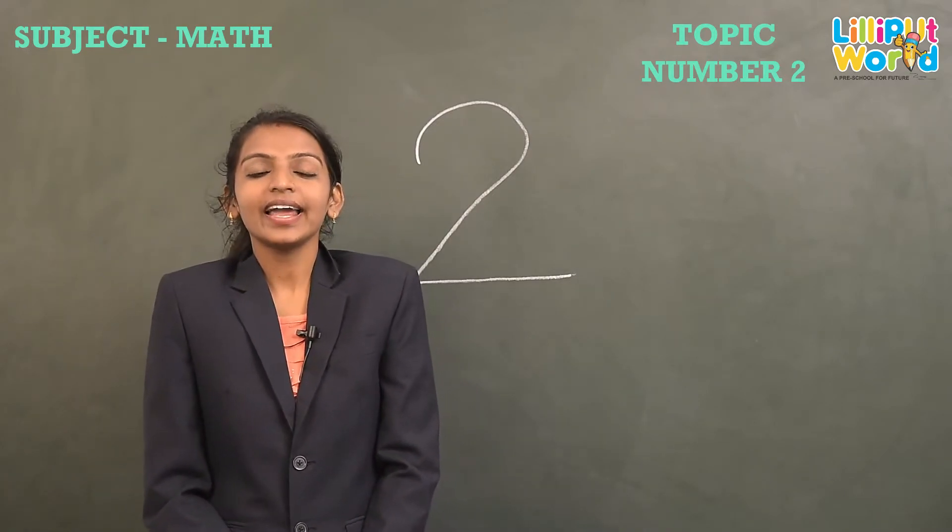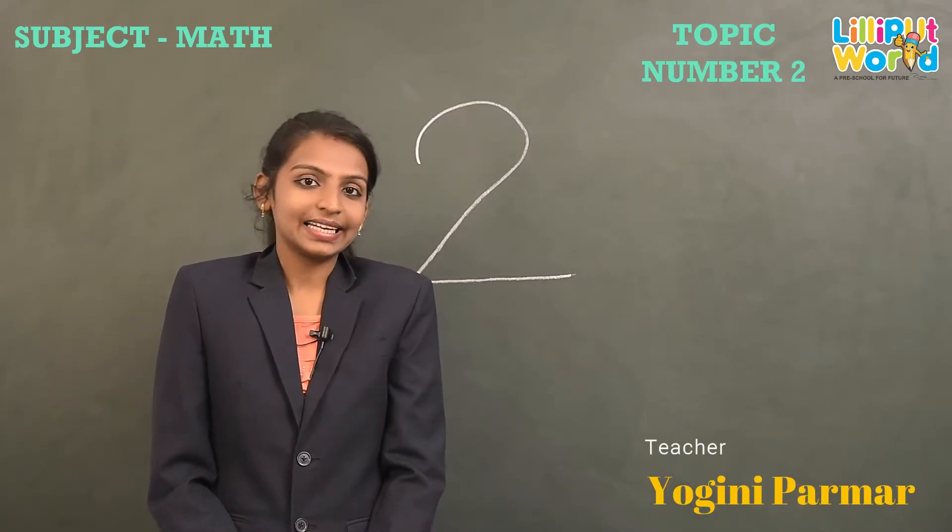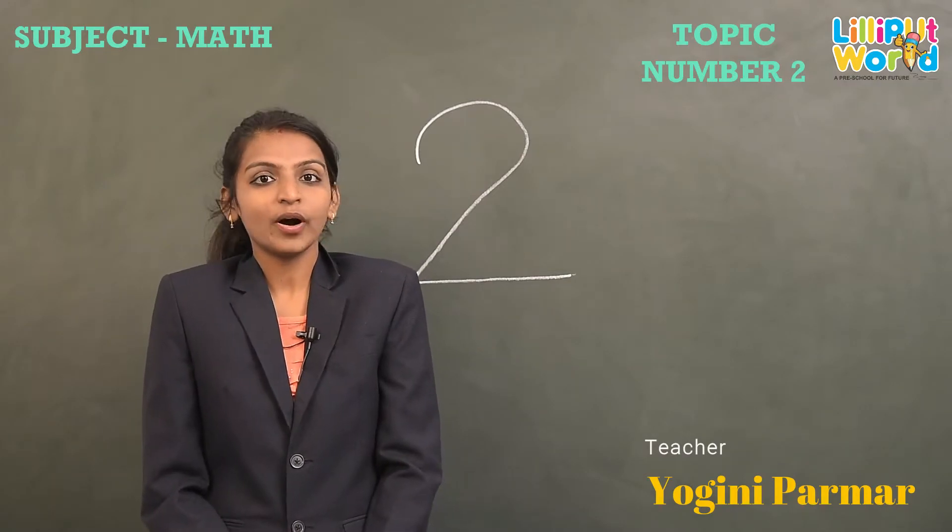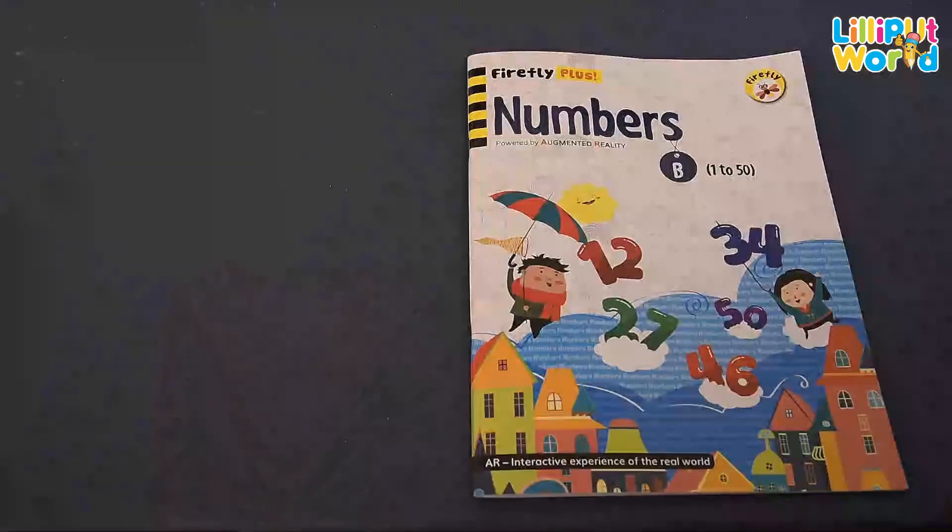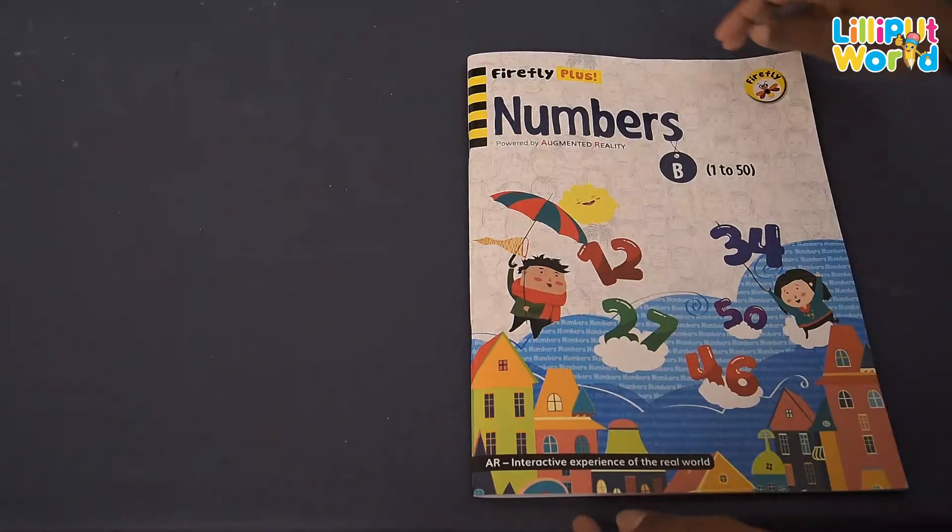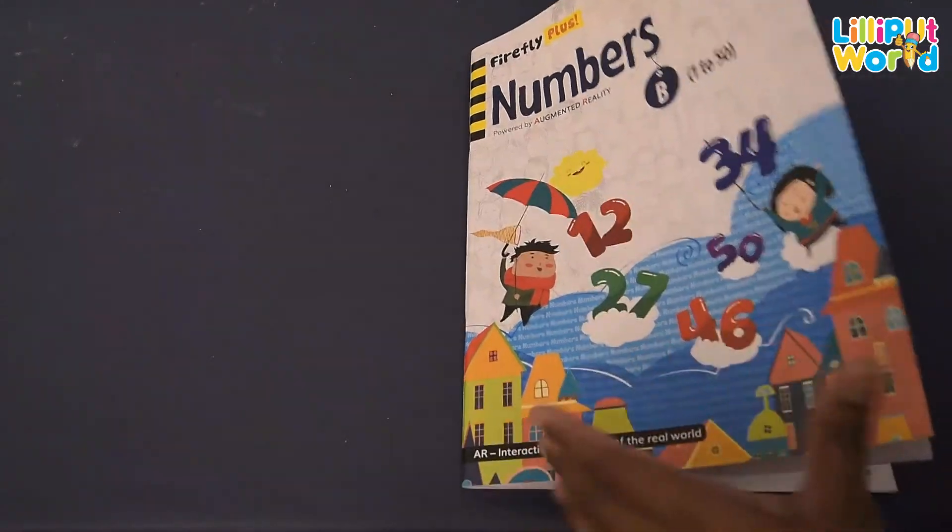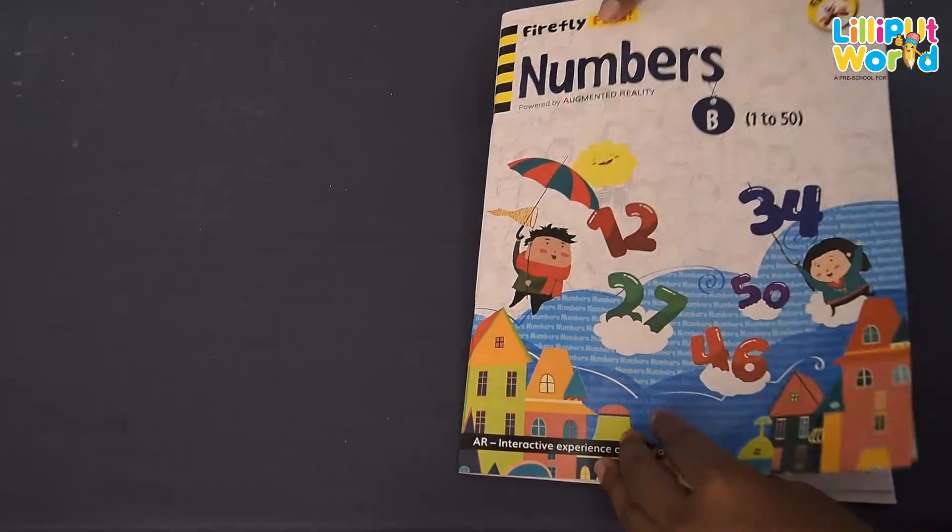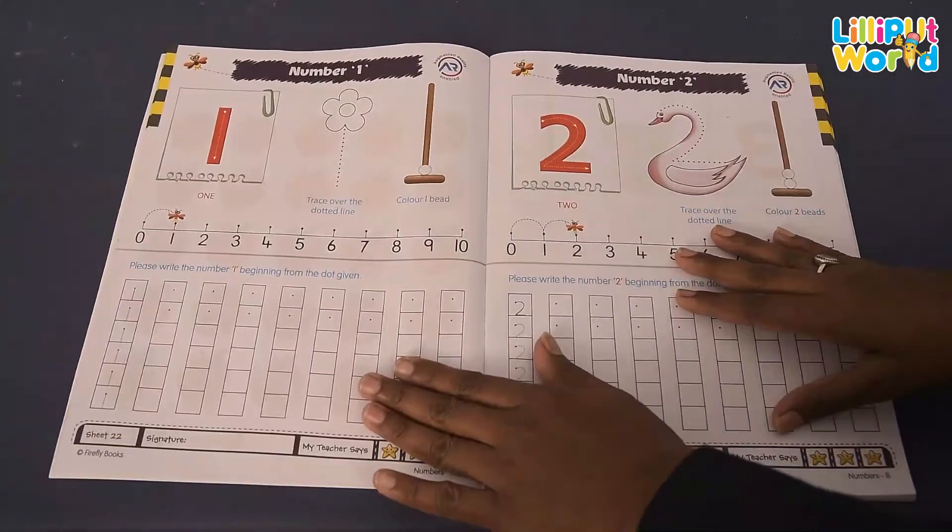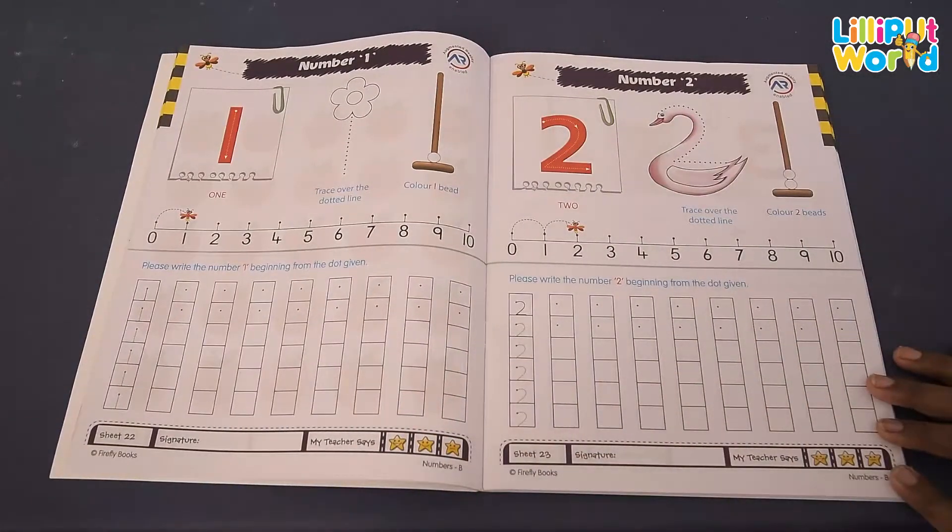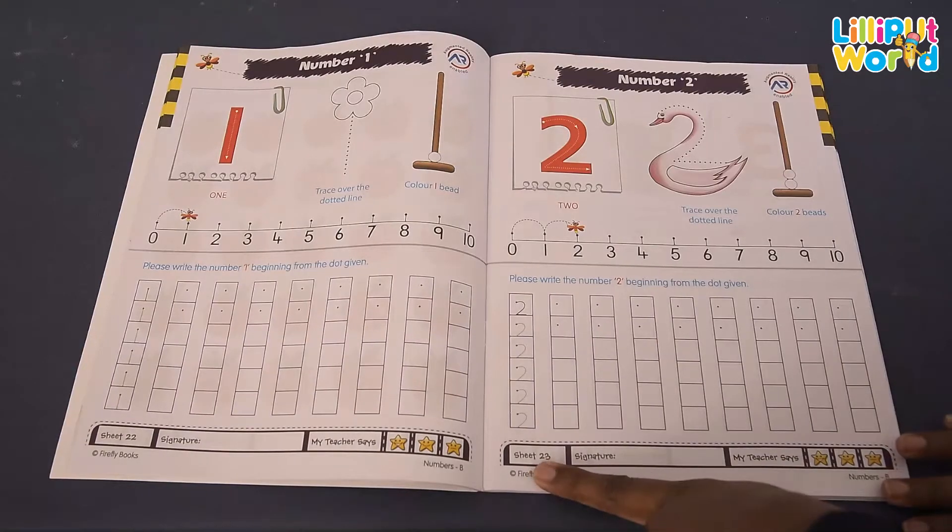Now we will write in your book and that is numbers B book. Come on, find your numbers B book, okay? Now take your numbers B book and go to the page number 23, okay? So open your book, go to the page number 23.